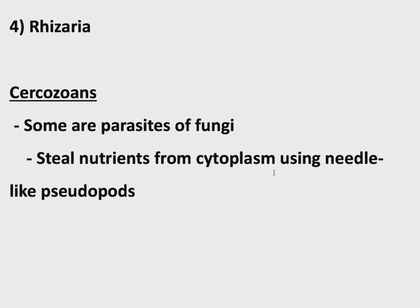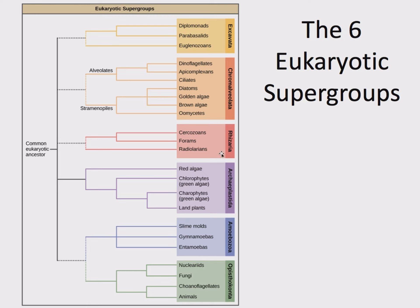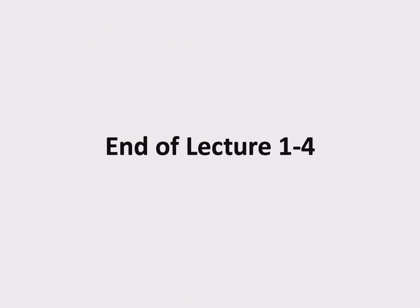That takes us to the end of Rhizaria — radiolarians, forams, and cercozoans. We've got a couple of big groups left, but this is typically where time runs out in Lecture 1.4, so we'll cut things off here and finish up this chapter in the next recorded lecture.